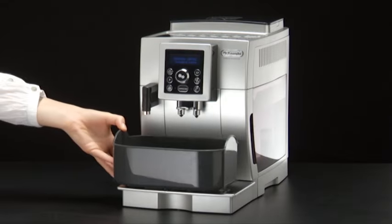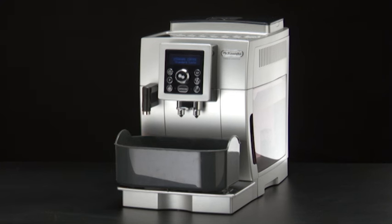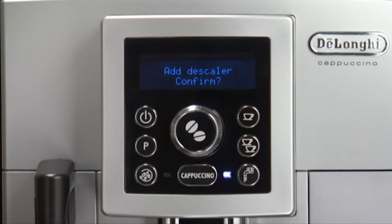Place an empty container with a minimum capacity of 1.5 litres under the hot water spout. Press the Hot Water Delivery button to confirm that you have added the solution.